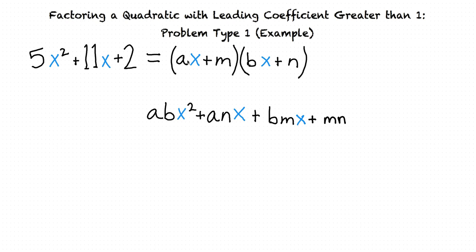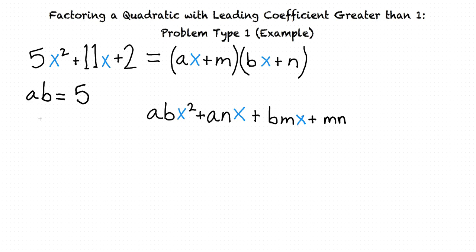We're trying to find values of a, m, b, and n that make the factored form equal our original expression. Comparing the x² terms, abx² must equal 5x², so ab = 5. Since 5 is prime, the only factors are 5 and 1, so let's choose a = 5 and b = 1.